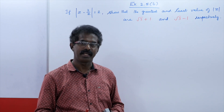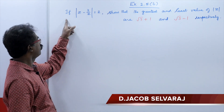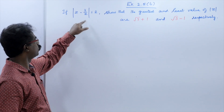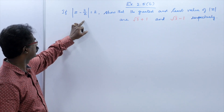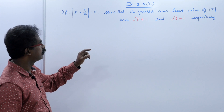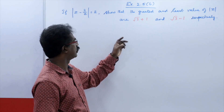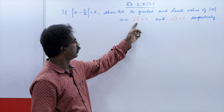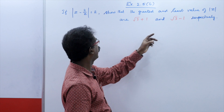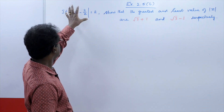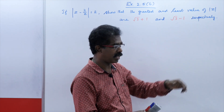Now let us see one very important question. If modulus z minus 2 by z equals 2, show that the greatest and least value of modulus z are root 3 plus 1 and root 3 minus 1 respectively. That is the greatest value and least value. We have to prove this given condition, then find the greatest and least value of modulus z.